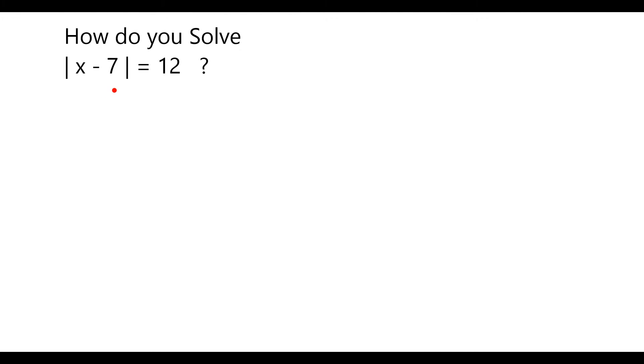We can solve an absolute value equation like this by splitting it into two different equations, meaning what's inside the absolute value will equal 12 if it's either equal to a positive 12 or a negative 12.